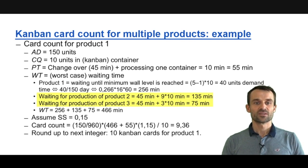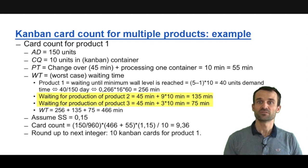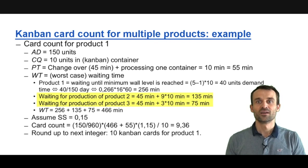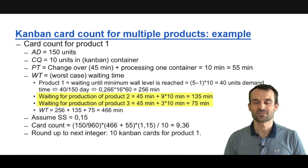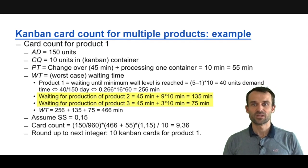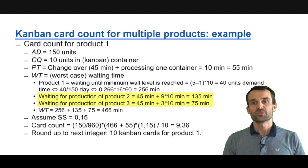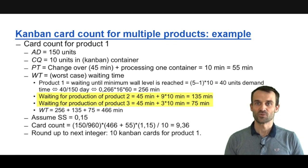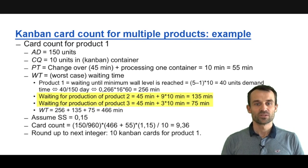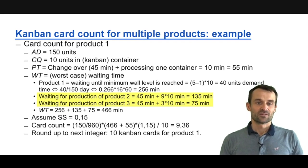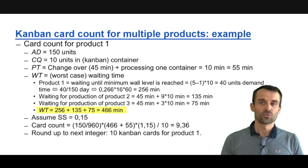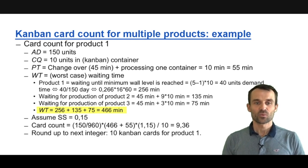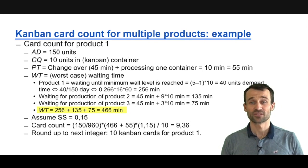The second part of waiting time is if other products are produced first. Even after the 5th Kanban card arrives, we might produce P2 first — a 45-minute setup plus 90 minutes for 9 container quantities = 135 minutes — and then P3, with its batch size of 3 container quantities taking 75 minutes. So waiting time for P1 is 256 minutes on the wall, plus 135 minutes for P2, plus 75 minutes for P3.